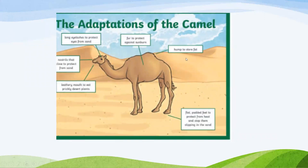Looking at adaptation of camels: the hump stores fat, it has nostrils that help protect from sand, long eyelashes to protect its eyes from sand, and its mouth is very leathery to eat prickly desert plants. In the desert, all plants are very spiny and prickly. The camel also has very thick fur to protect from sunburn, and its special hooves allow it to walk on sand. That is why it is also called the ship of the desert.